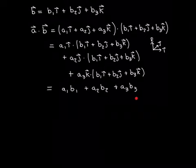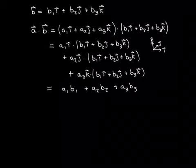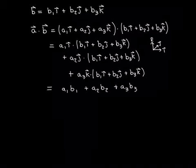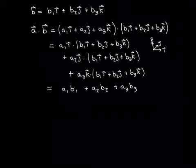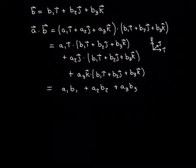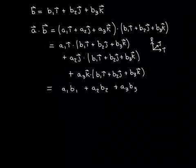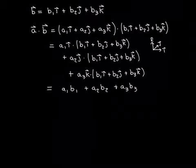And that is where the formula comes from. The dot product of A and B is A1B1 plus A2B2 plus A3B3, where these numbers are the components of A and B as linear combinations of the standard basis of perpendicular unit vectors. Note this argument would not work if these were not unit vectors and perpendicular to one another.